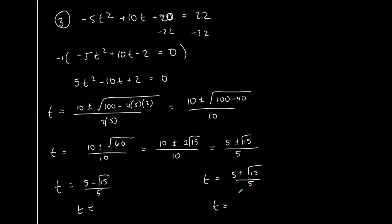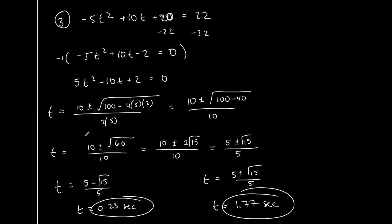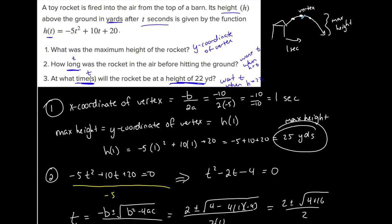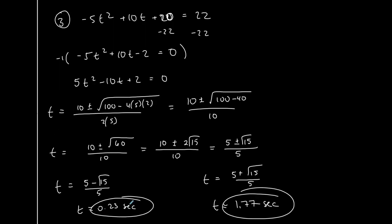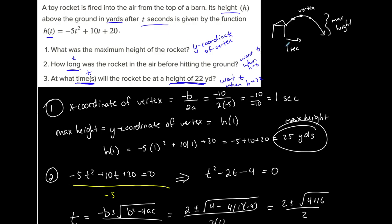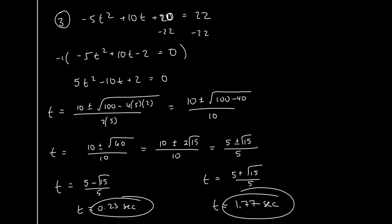I'm expecting two solutions to make sense for this situation. Plugging in: 5 minus the square root of 15 over 5 gives approximately 0.23 seconds, which sounds about right because I expected less than 1 second. And 5 plus the square root of 15 over 5 gives approximately 1.77 seconds, which I expected because it's a little bit greater than 1 second — it took 1 second to reach the maximum height. So the two times when the rocket is at 22 yards are approximately 0.23 seconds and 1.77 seconds.